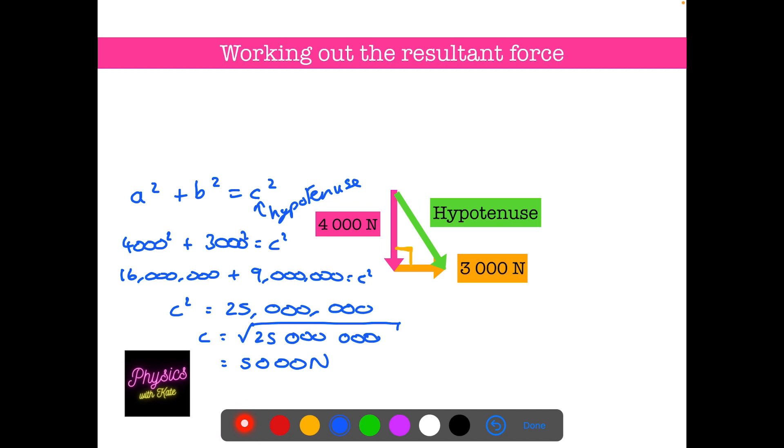Now that gives us the size of the force, but it doesn't give us the direction. So we'll usually want to work out a direction. And for that, we're going to use trigonometry. So hopefully you're familiar with SOHCAHTOA. So I'm going to work out the angle here using tan. So we're going to do the inverse tan to get back to the angle.